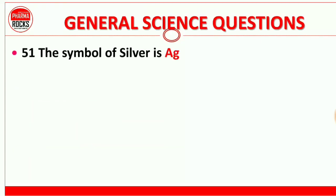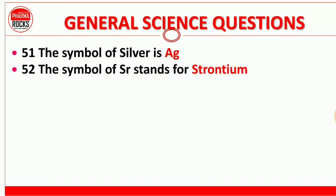Question number 51: The symbol of silver is AG. Question 52: The symbol SR stands for strontium. Strontium metal ke liye symbol hai SR.